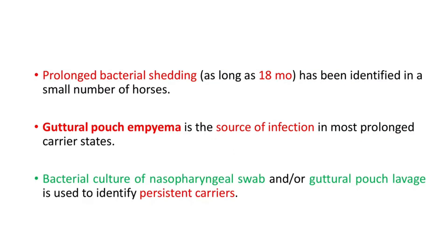Prolonged bacterial shedding — as long as 18 months — has been identified in a small number of horses. Guttural pouch empyema is the source of infection in most prolonged carrier states. Bacterial culture of nasopharyngeal swabs and/or guttural pouch lavage is used to identify persistent carriers. That concludes the topic of strangles in horses — all the clinical signs, diagnosis, control, and treatment aspects of this disease are very important.